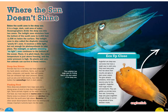Animals that live in the deep sea have adapted to the harsh abiotic conditions. Some, such as sea jellies, octopuses, and squids, have soft bodies that can withstand higher water pressure. Others, such as eels and bristle mouths, have thin dark bodies that camouflage them in dark waters.